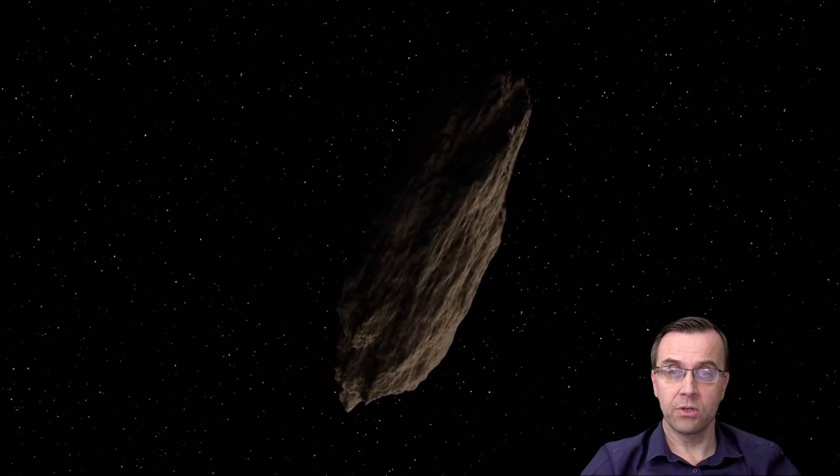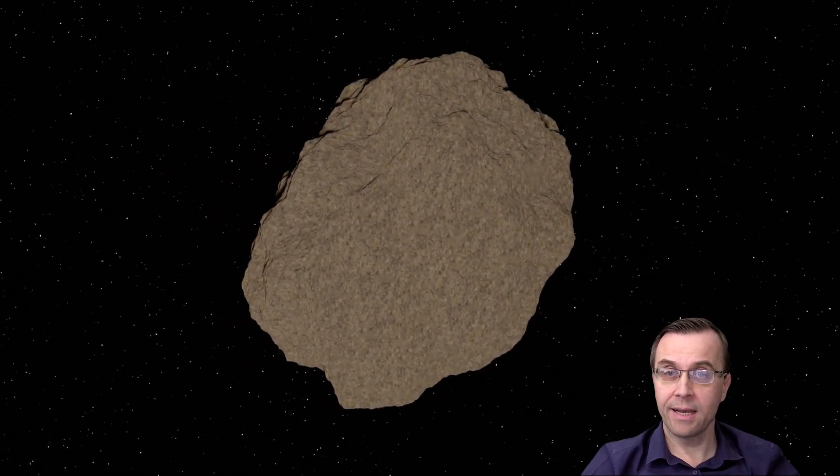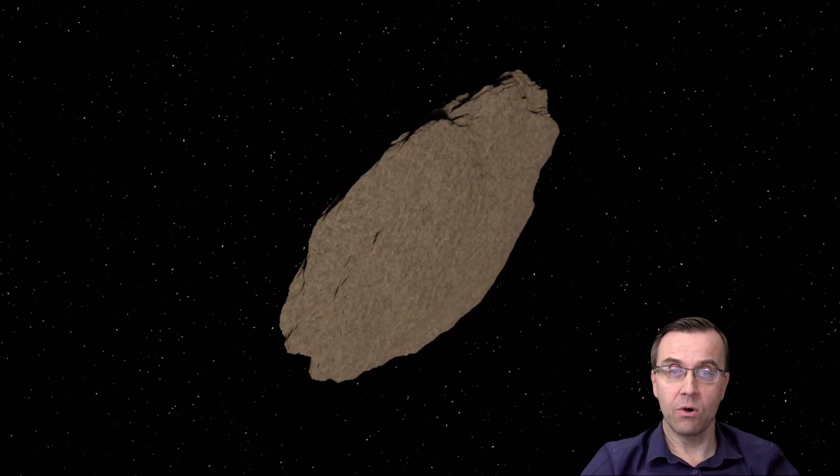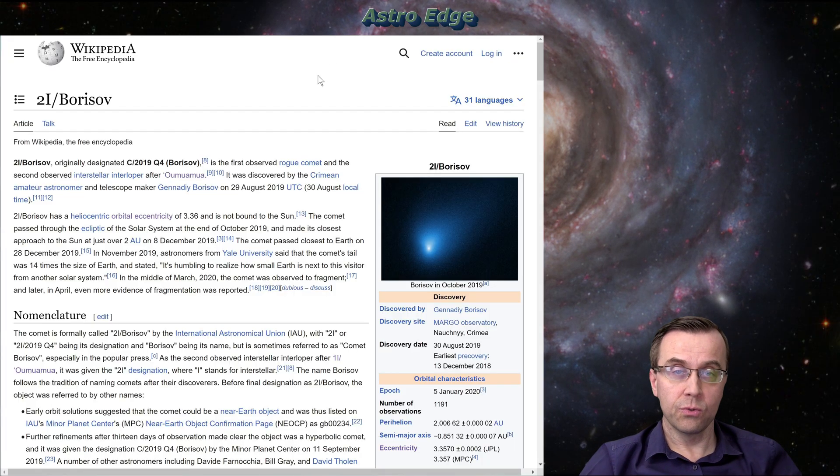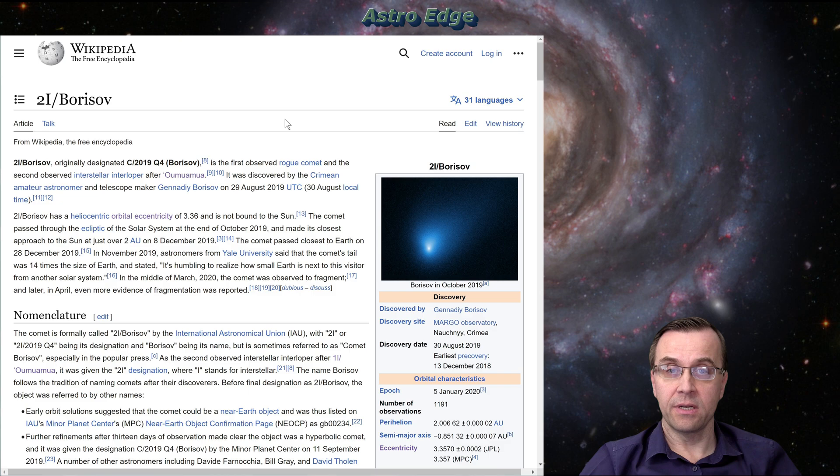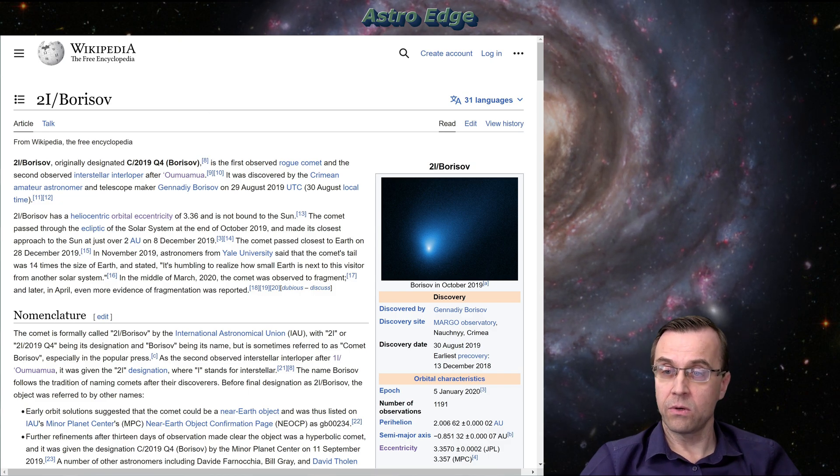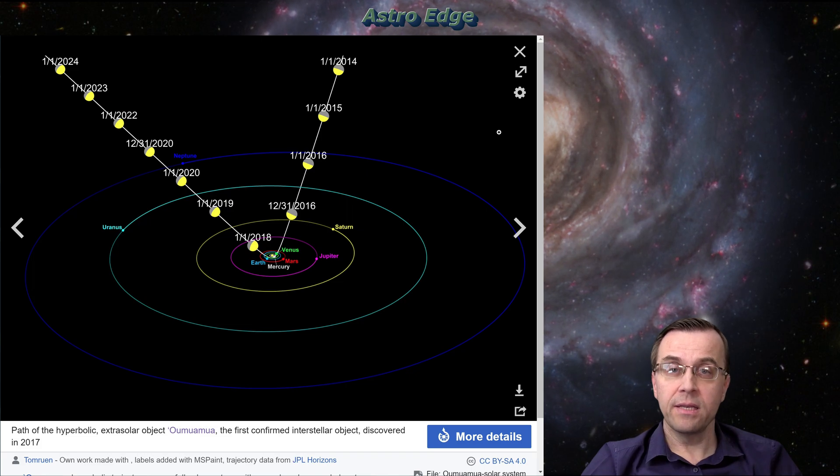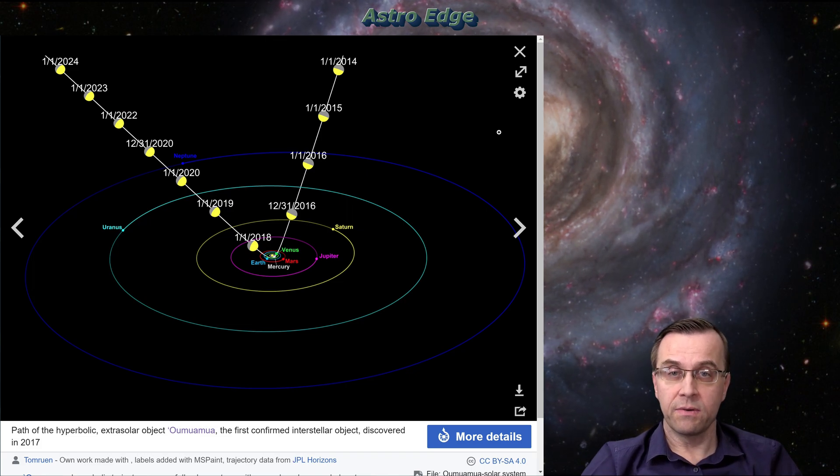One of them is the famous, the very first interstellar asteroid Oumuamua. I did my own research on this object, showing that its shape is most likely a disc or a slab, not a cigar as commonly assumed. This was soon followed by the second interstellar asteroid or rather comet called Borisov. So how do we know that an object came from interstellar space and not a part of our solar system?